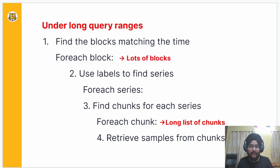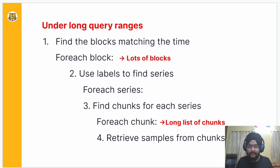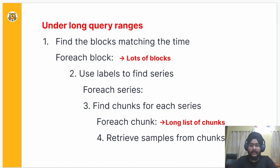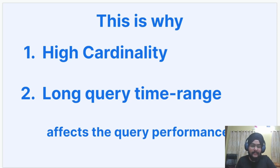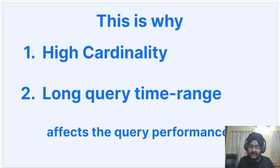Similarly, a query with a long time range will involve many blocks that overlap the query's time range, meaning you have to read the index file from each of those blocks. This causes the following steps to slow down since step two depends on step one. A long time range also means looping through many more chunks received from step three that overlap the query's time range. This is why a simple PromQL query, when executed in a high cardinality system or with a long time range, slows down querying performance.